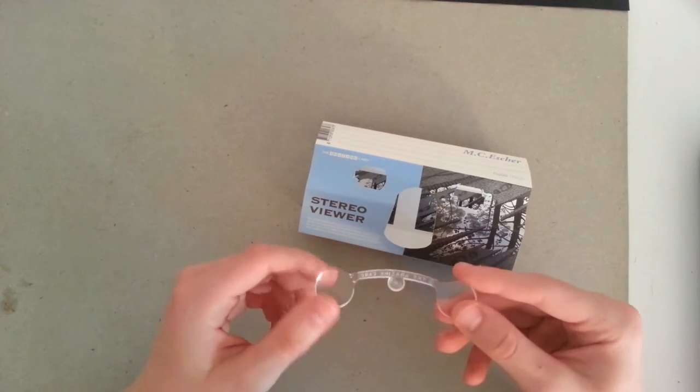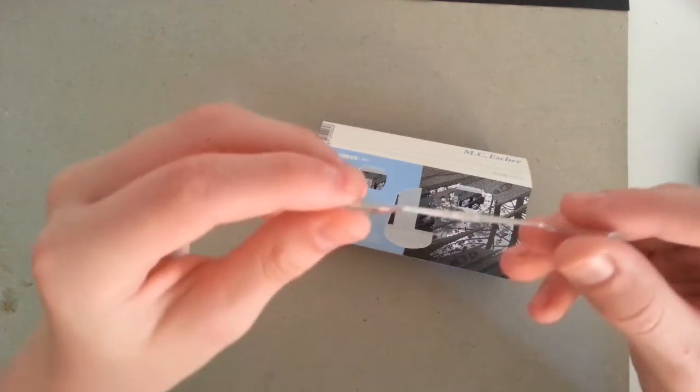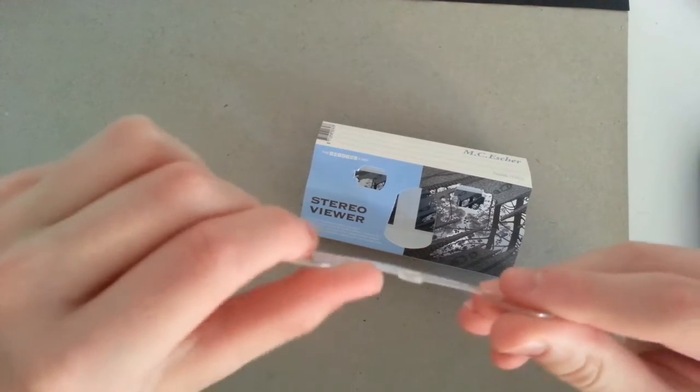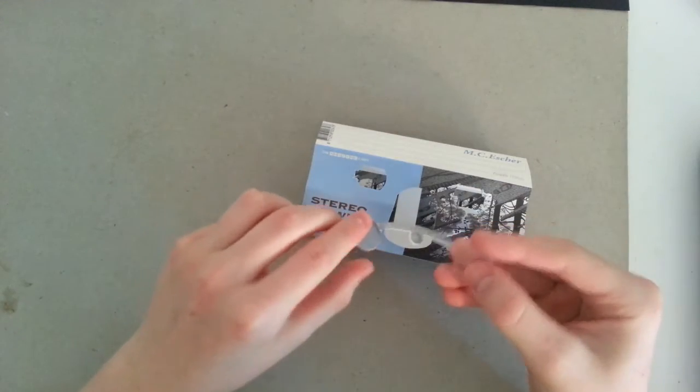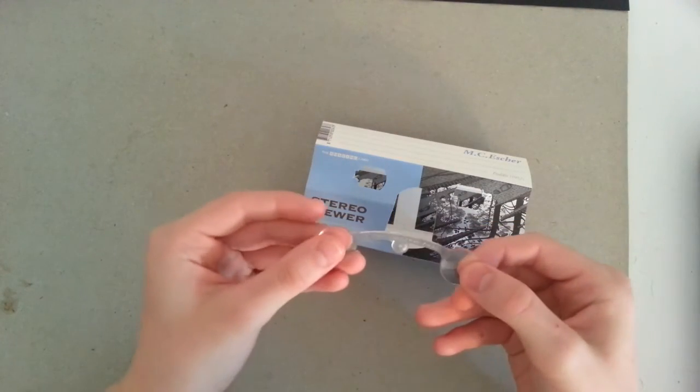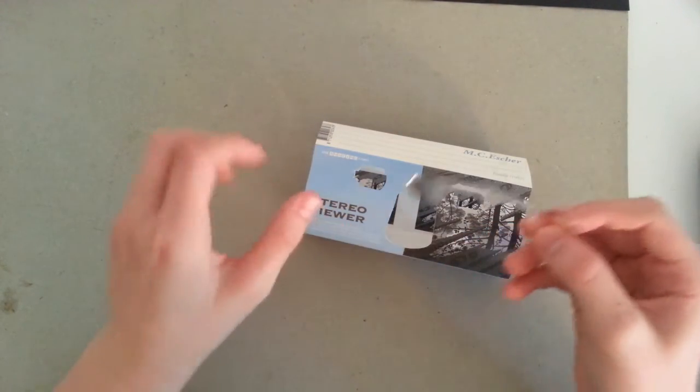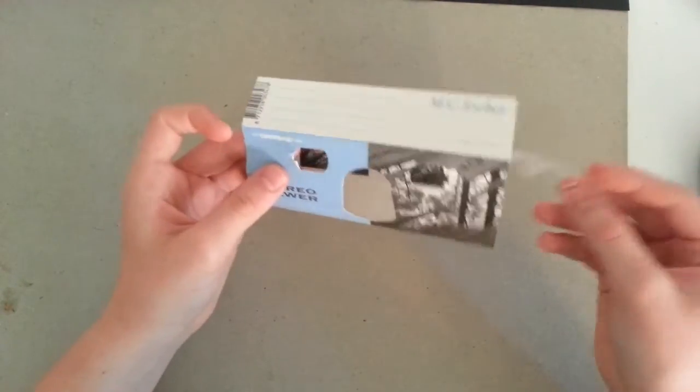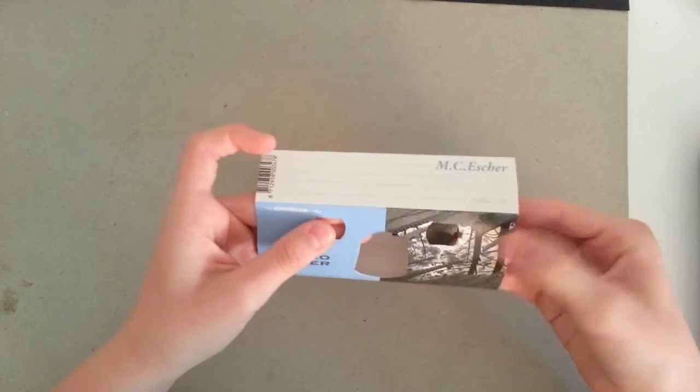And what you want to notice when you pop it out is that the part facing you is the flat side and the other side is the more rounded side. So what you want to do is just turn over your stereo viewer lenses and then just pop it back in so the curved side is facing you and the flat side is facing inside of the stereo viewer.